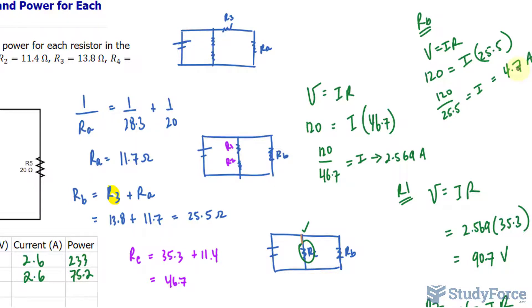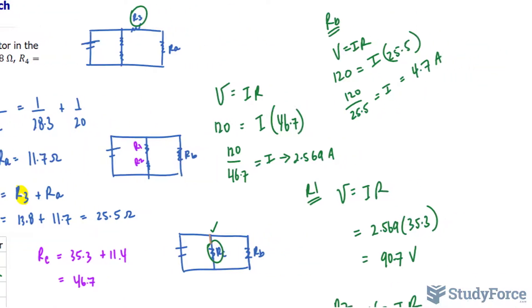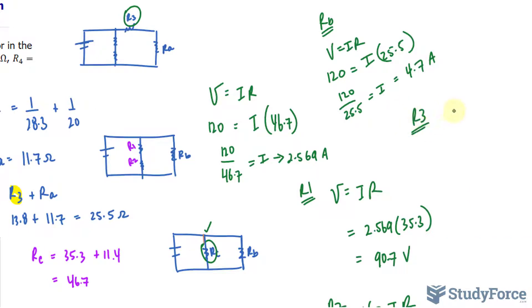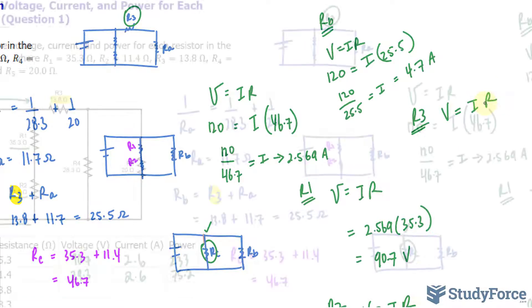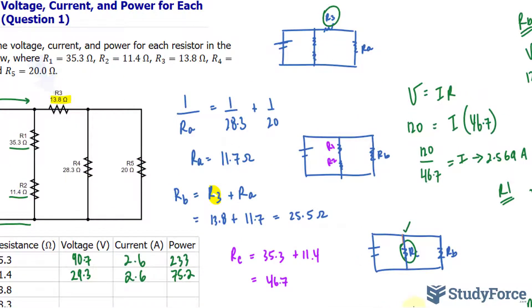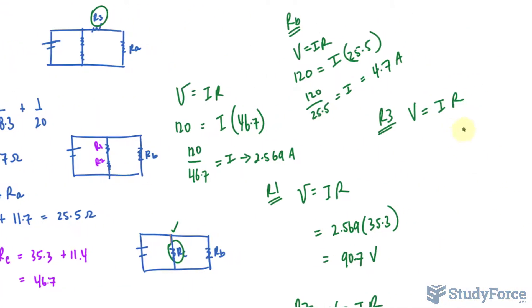We'll use this information now to find out what we need to know about R3, because R3 and RA is what makes up RB. For R3, we have V equals IR. The resistance of R3 is 13.8, and we'll multiply that by 4.7. Multiplying these out gives us the voltage at R3: 4.7 times 13.8 equals 64.86.